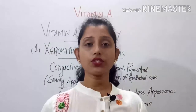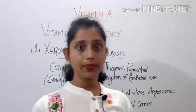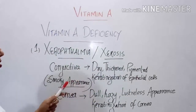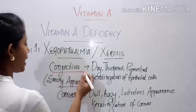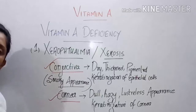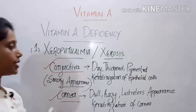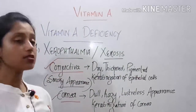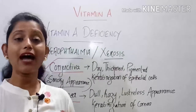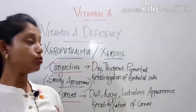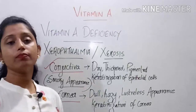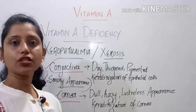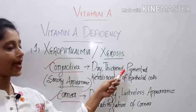The first condition due to Vitamin A deficiency is xerophthalmia, also referred to as xerosis. Xerophthalmia can affect the conjunctiva as well as the cornea. Conjunctival xerophthalmia results in dry, thickened, and pigmented conjunctiva due to keratinization of epithelial cells — keratin being a basic protein — resulting in dry, thickened, and pigmented conjunctiva.